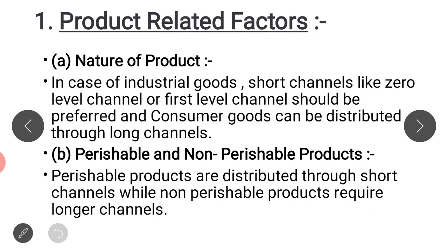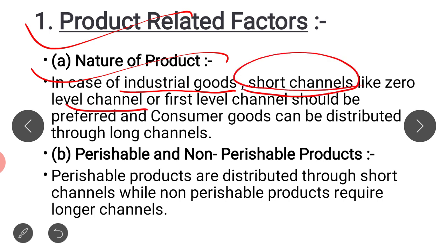Our first factor is the product-related factor — how does your product affect the choice of distribution channel? For industrial goods, the channel will be a short channel, meaning a zero-level or first-level channel. This is because industrial goods are very technical, expensive, and customized — they are made according to the needs of the customer. So for these particular goods we use a zero-level or first-level channel.